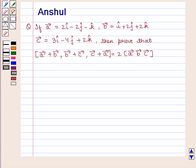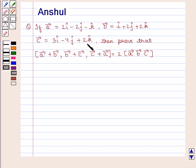Hello and welcome to the session. In this session, we are going to discuss the following question: If vector A is equal to 2i cap minus 2j cap minus k cap, vector B is equal to i cap plus 2j cap plus 2k cap, vector C is equal to 3i cap minus 4j cap plus 2k cap, then prove that scalar triple product of vectors A plus B, B plus C, C plus A is equal to twice of scalar triple product of vectors A, B, C.